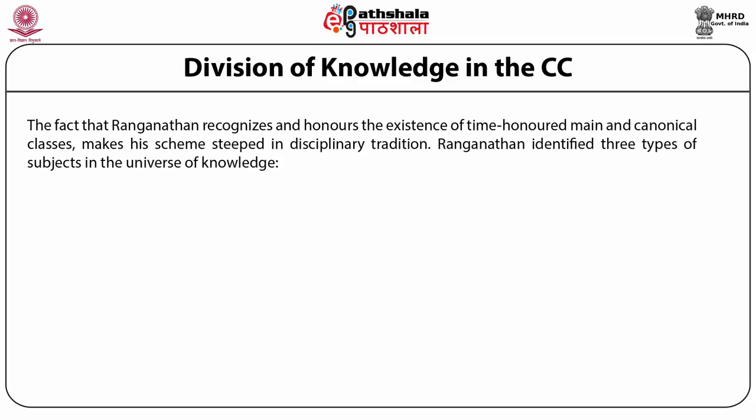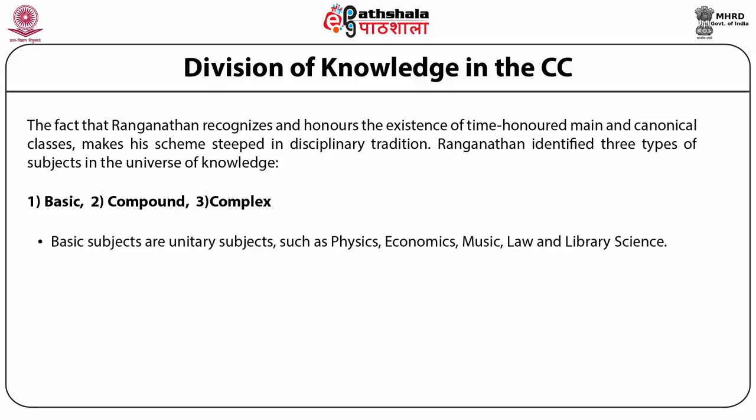Ranganathan divided the universe of knowledge first into disciplines — so it is a disciplinary classification as is the DDC — and further into main classes. Ranganathan identified three types of subjects: basic subjects (main classes and unitary subjects such as physics, economics, music, law, library science), compound subjects (basic subjects with additional facets, e.g., velocity of light, transport economics, guitar music), and complex subjects.